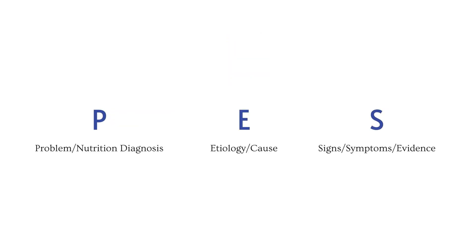A PES statement is broken down into three parts. The P, which stands for problem or your nutrition diagnosis. E, which stands for etiology, otherwise known as the cause of the nutrition problem. And S, which stands for signs and symptoms. This is your evidence that the problem exists. It also supports your etiology and shows that the etiology you listed is actually the cause of the problem.